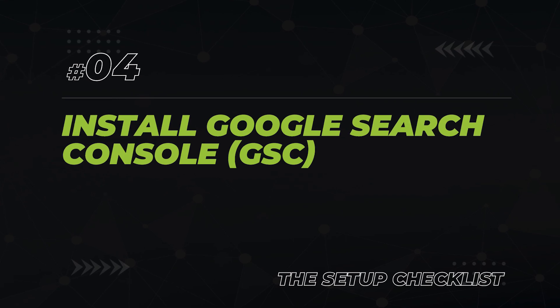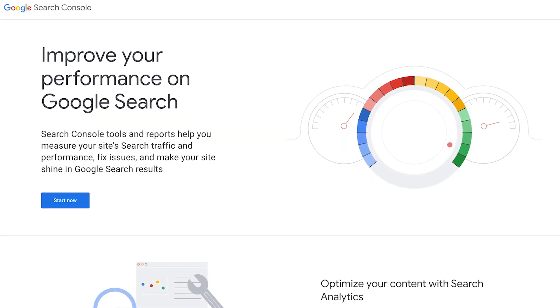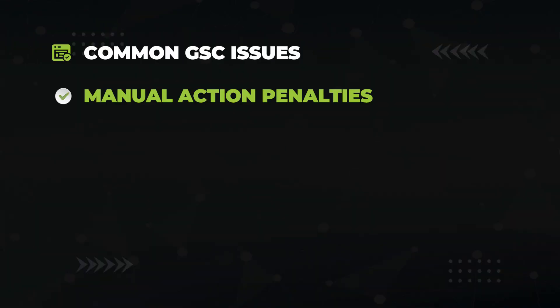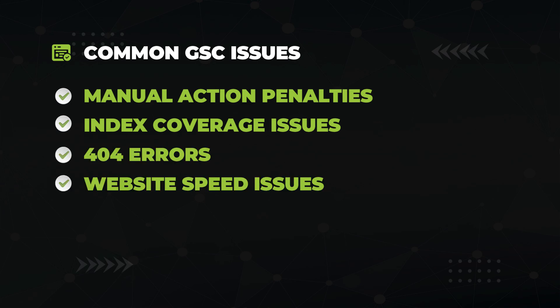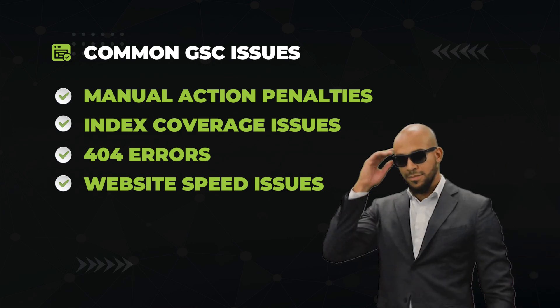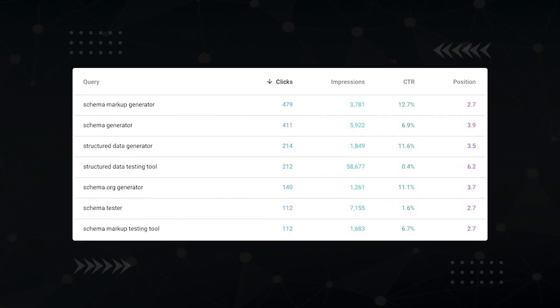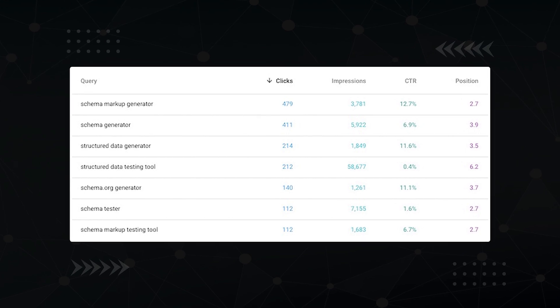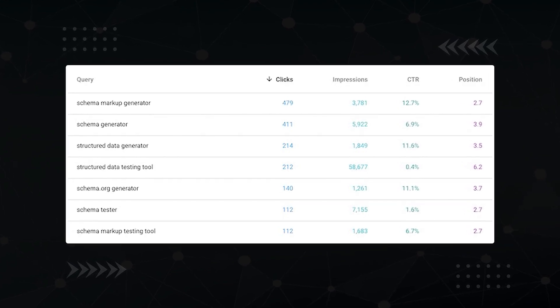After that, you want to set up Google Search Console, or GSC, for your website. GSC is a free tool which acts as a health dashboard for your site. It checks for common but important SEO issues such as Google manual action penalties, index coverage issues, 404 errors, and website speed issues. We'll get to all this stuff later in the critical technical SEO section. In addition, Google Search Console will also keep track of which keywords you're ranking for, letting you know when you're making progress.